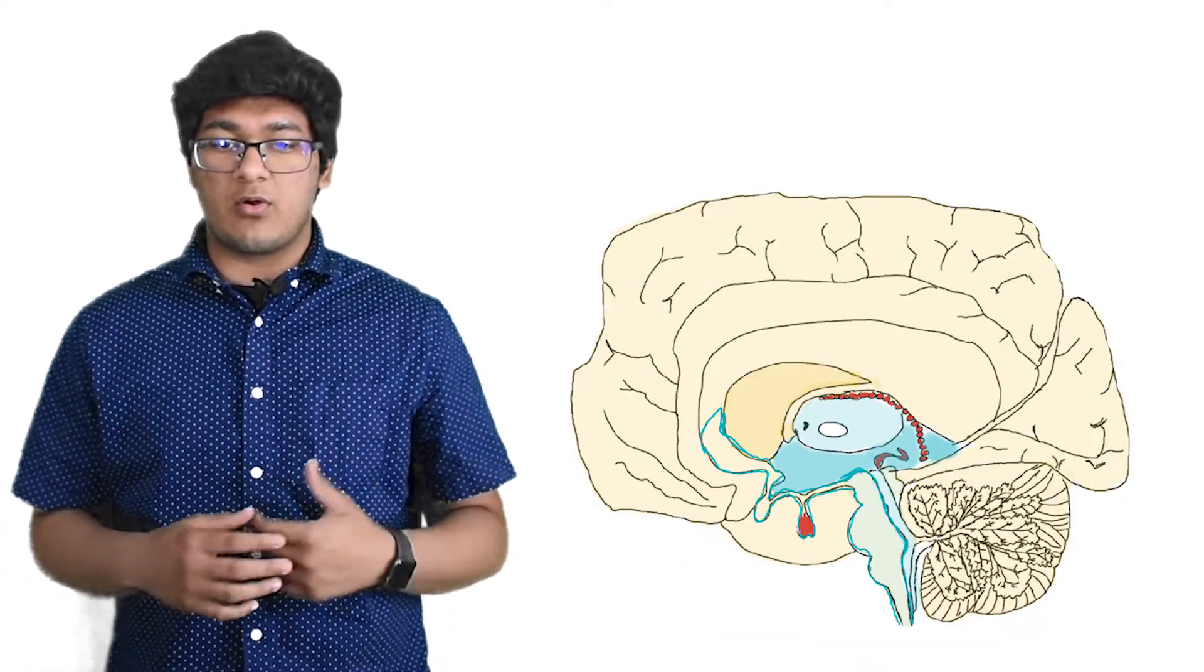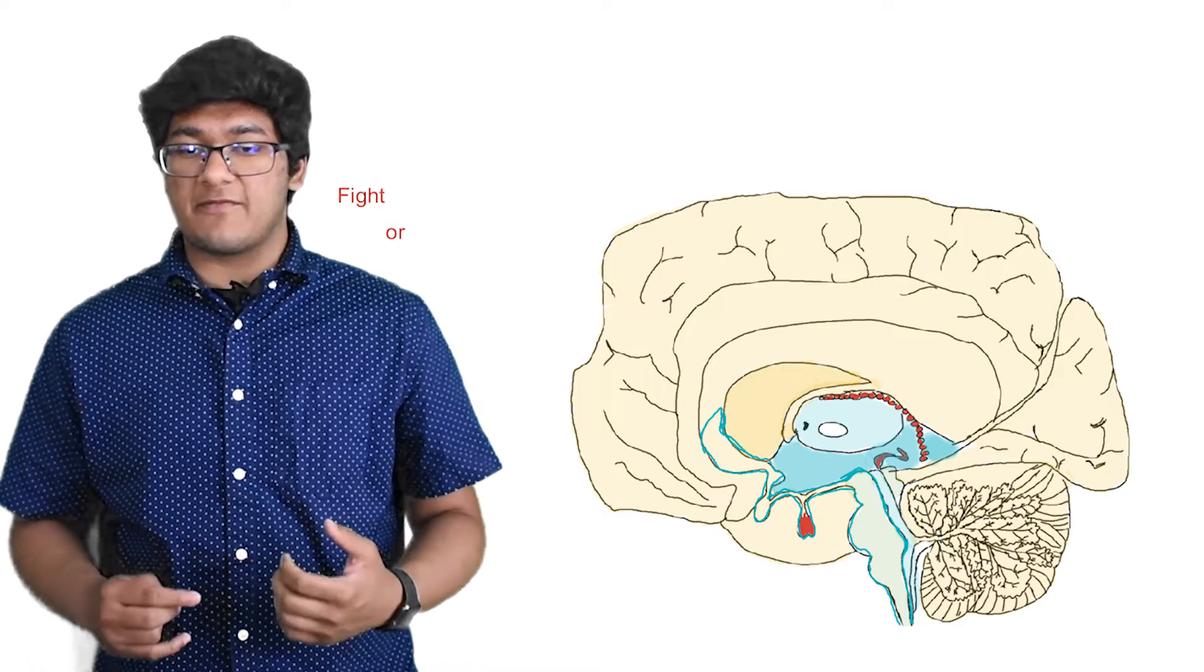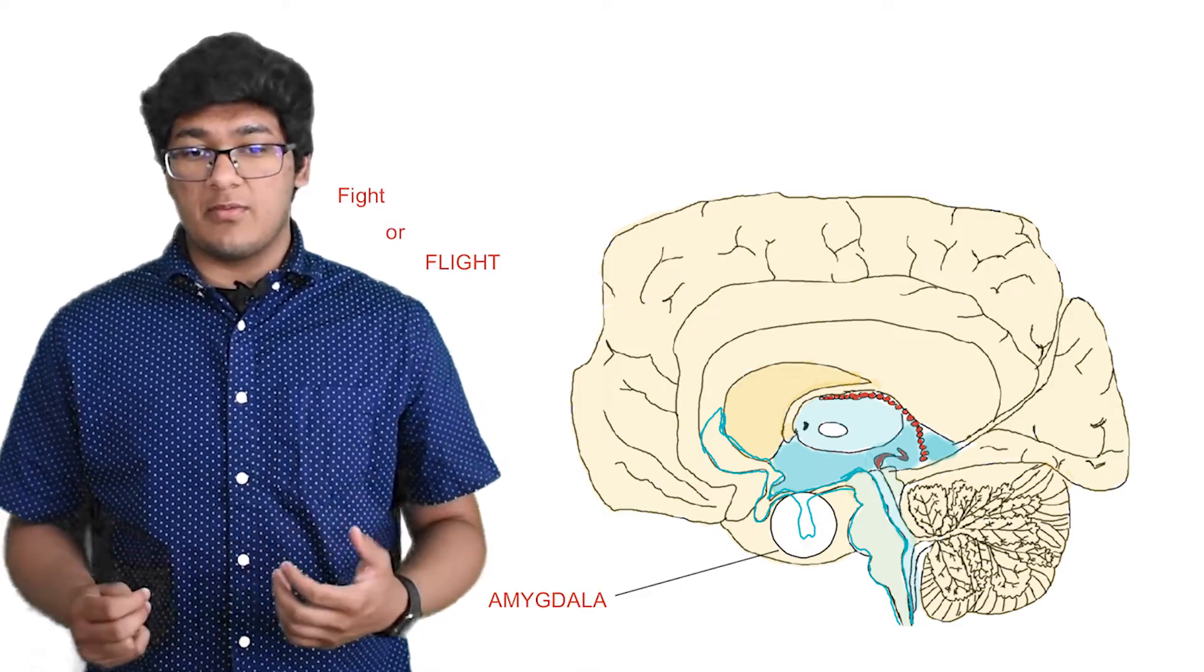Emotions arise from the limbic cortex, and illnesses such as trauma arise from the amplified fight-or-flight response from the amygdala or infralimbic cortex.